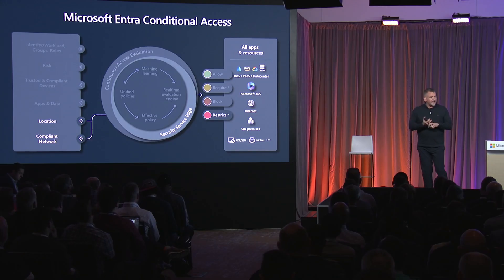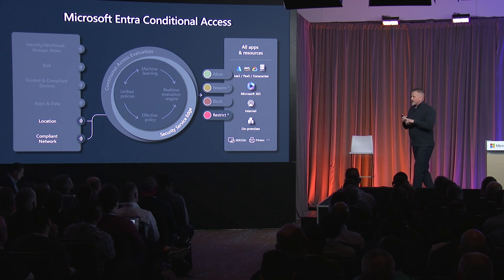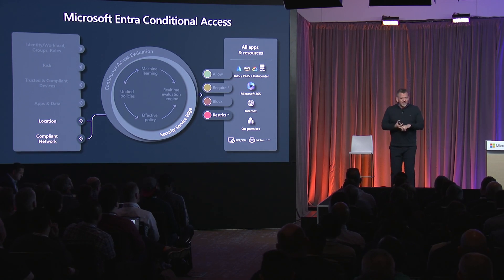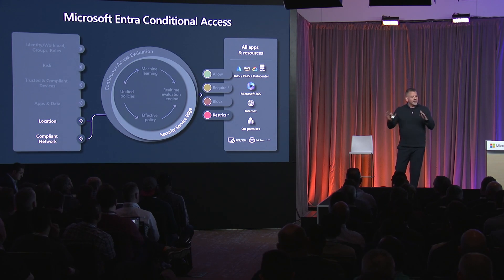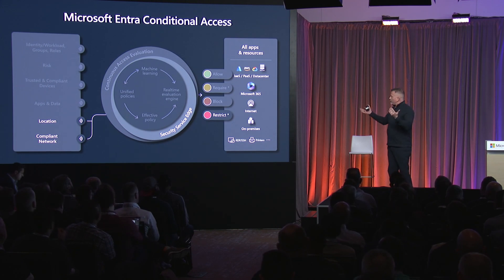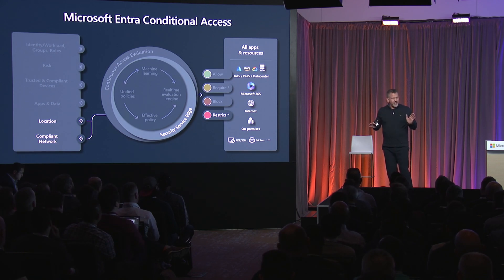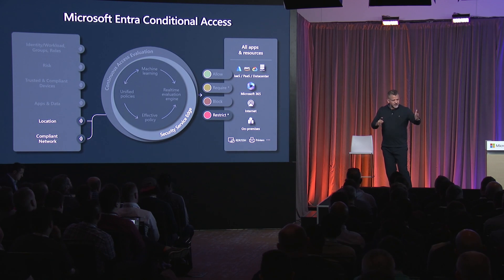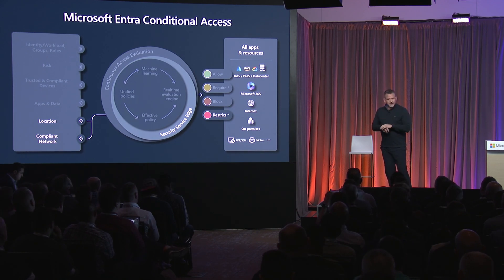Now we can get you to things like RDP servers, printers, and file shares. We can get you to legacy applications that maybe aren't even integrated with our identity system yet, and give you the full power of our conditional access system and our zero trust benefit — just because the user, the device, and the network are now all integrated into the zero trust engine.